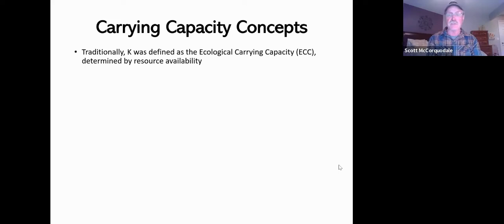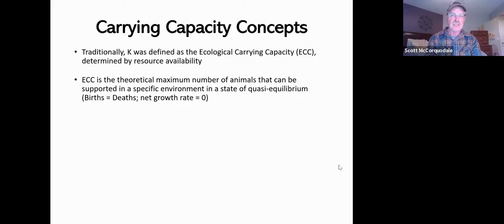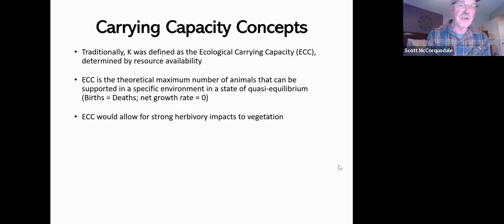So that K that was on that curve is typically defined as the ecological carrying capacity—another way of thinking of it, ECC. It's this sort of limit imposed by resource availability. As a definition, it's the theoretical maximum number of animals that can be supported in a specific environment in a state of quasi-equilibrium. When you're at an ECC, births by definition equal deaths and the net growth rate is zero—that's that flat part of the curve.